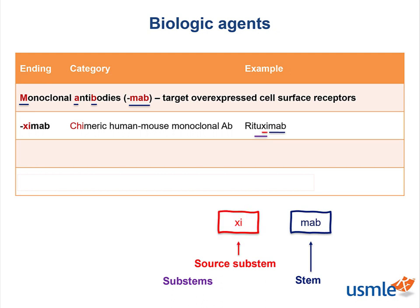In this case, the 'XI' tells us that it is a chimera, or cross between species — for example, a human and a mouse.